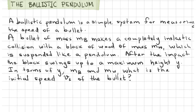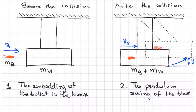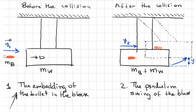I have the illustration of this problem right here. I want to take into consideration what happens when the bullet gets into the block. We analyze this problem in two stages — before and after the collision — as shown in the illustration. The first part is the embedding of the bullet in the block. During this first part, the bullet embeds itself because it's moving with a velocity V1 from the left. But this process is so fast that when the bullet gets into the block, the block doesn't move.